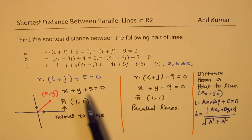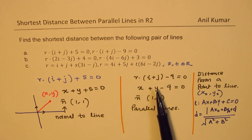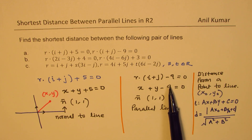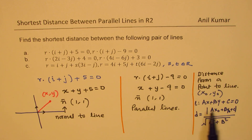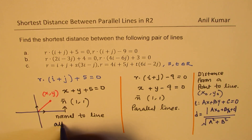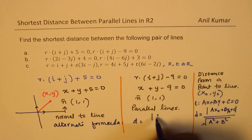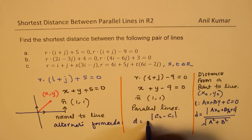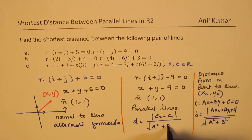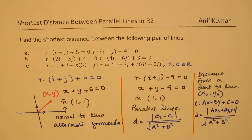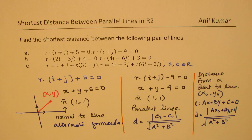One interesting thing when we have parallel lines: we could use a y-intercept as the point. An alternate formula is that the distance equals the absolute value of (c2 minus c1) over the square root of (a² plus b²), where c2 and c1 are the constants from the two parallel line equations.